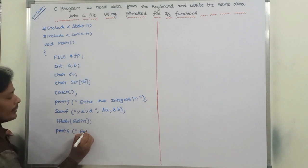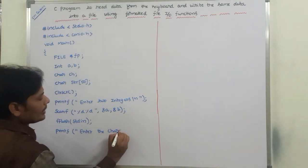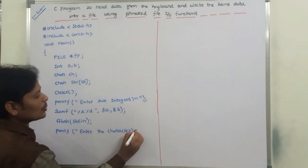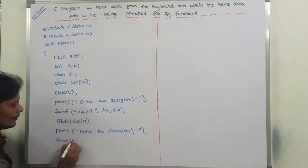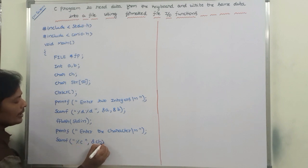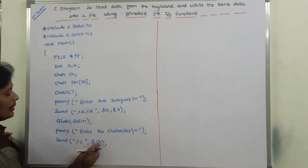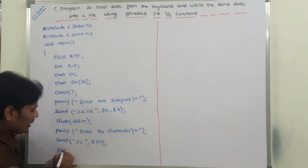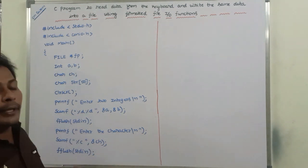Next, printf("Enter a character"). This character is read from the keyboard using scanf("%c", &ch). The character data is stored in the variable ch. After that, we write fflush(stdin) again to clear the buffer.